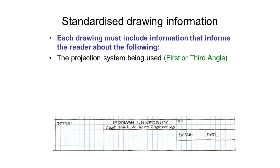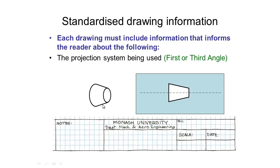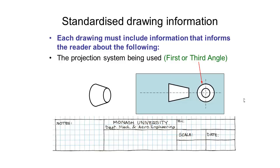The first thing we need to indicate in our title block is the projection system being used. You might recall from the last set of videos I mentioned first and third angle projections. With a conical shape, the first angle projection places a particular view down in one position, whereas the third angle places it on the other side. This is how all drawings are drawn to Australian standards — we add this to each of our drawings, or if we prefer we can simply write in the notes that we are using a third angle projection.